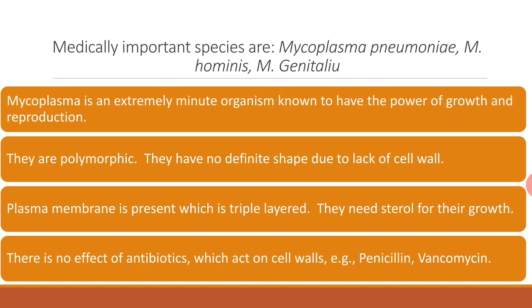Mycoplasma is an extremely minute organism known to have the power of growth and reproduction. In fact, mycoplasma is considered the smallest living organism. They are polymorphic — they have no definite shape due to the lack of a cell wall. A plasma membrane is present, which is triple-layered. They need sterol for their growth. There is no effect of antibiotics which act on cell walls.